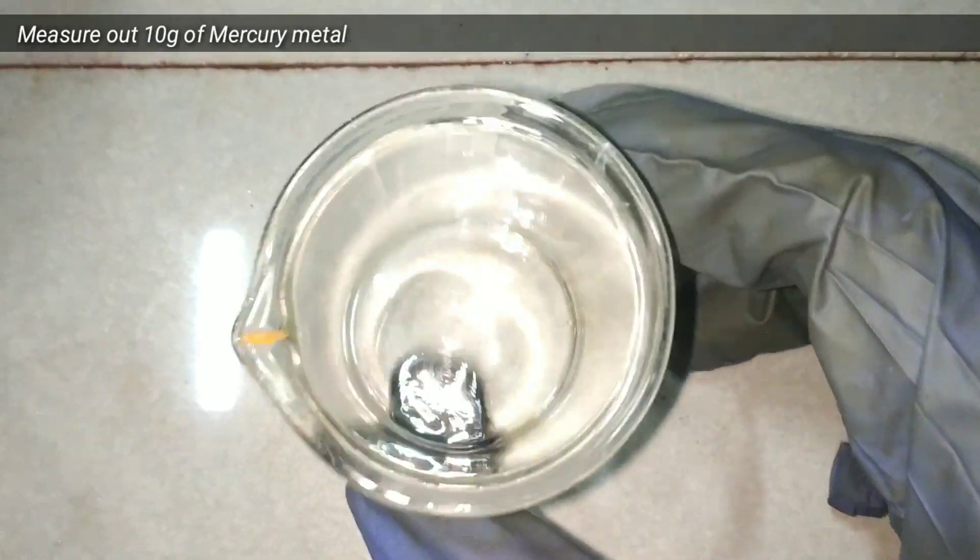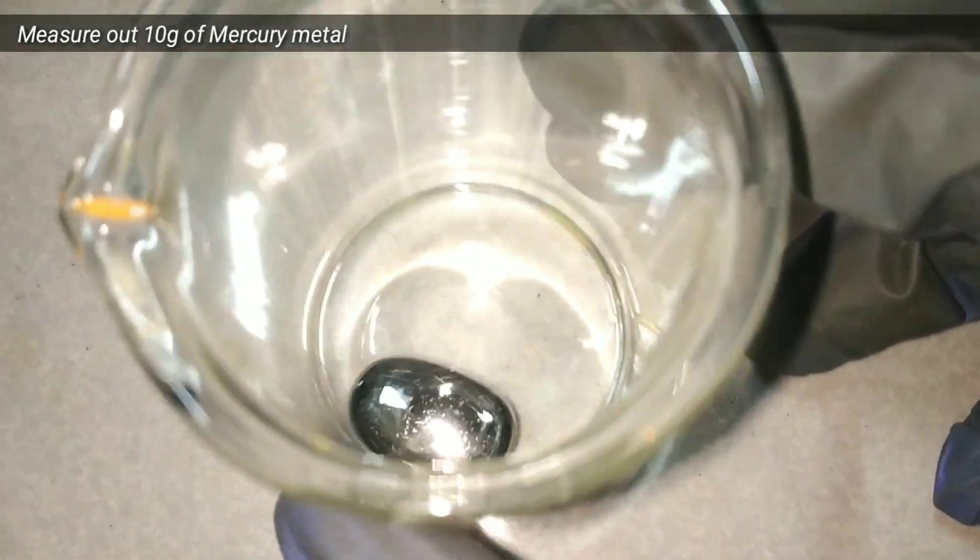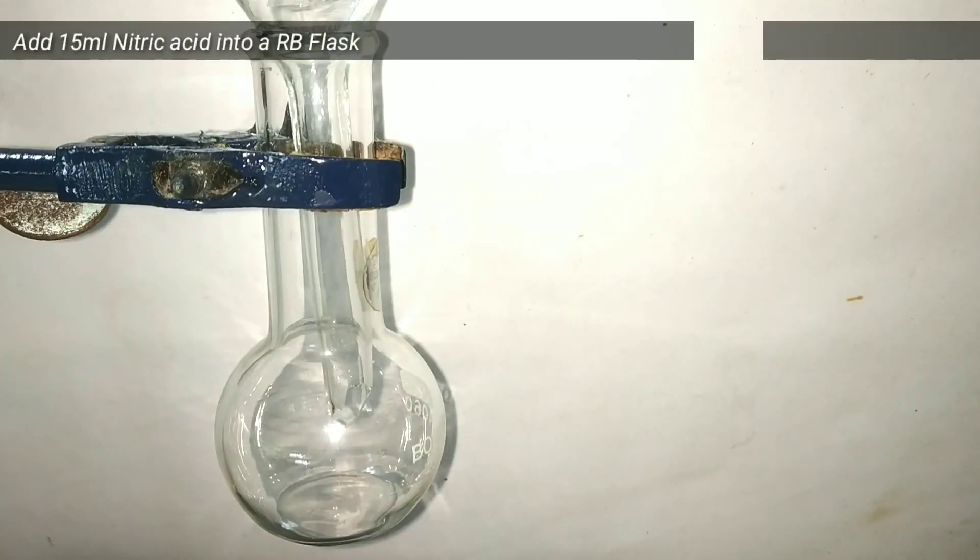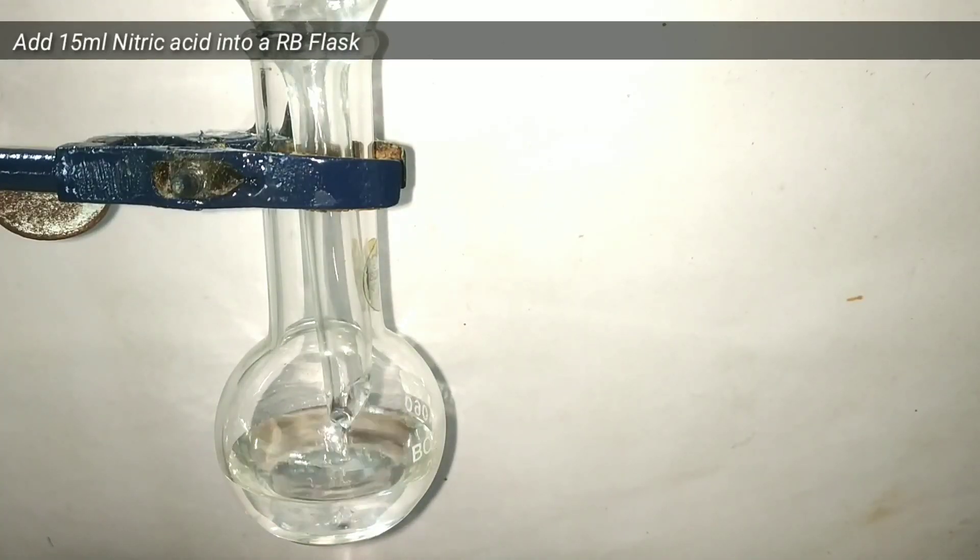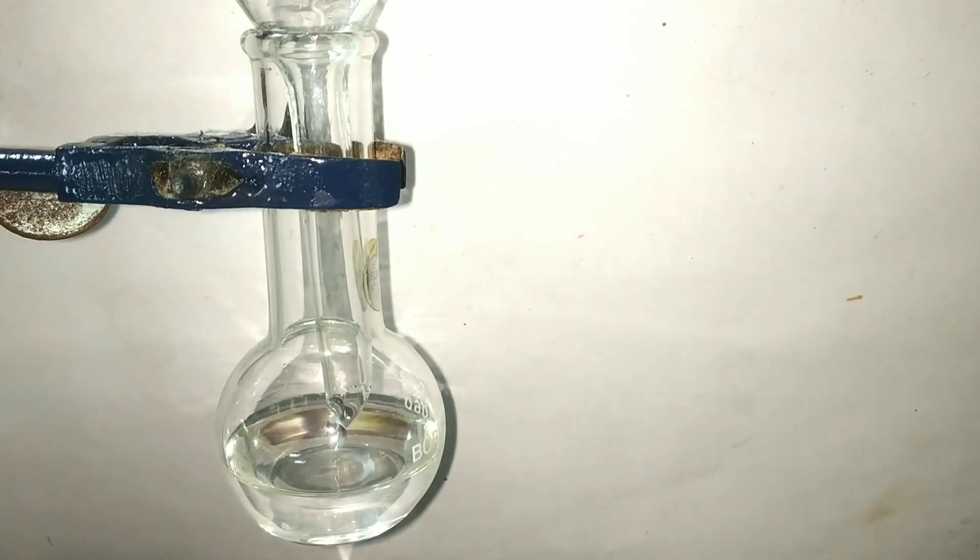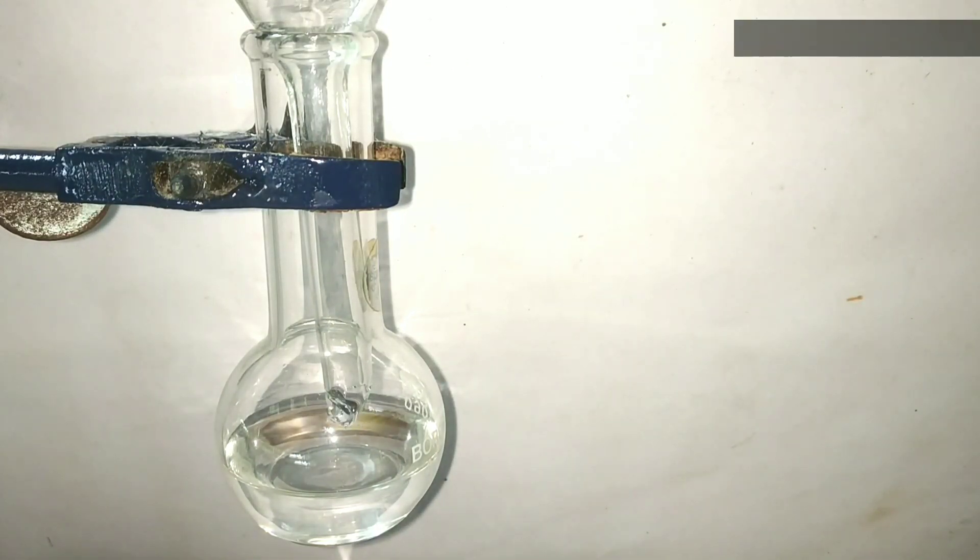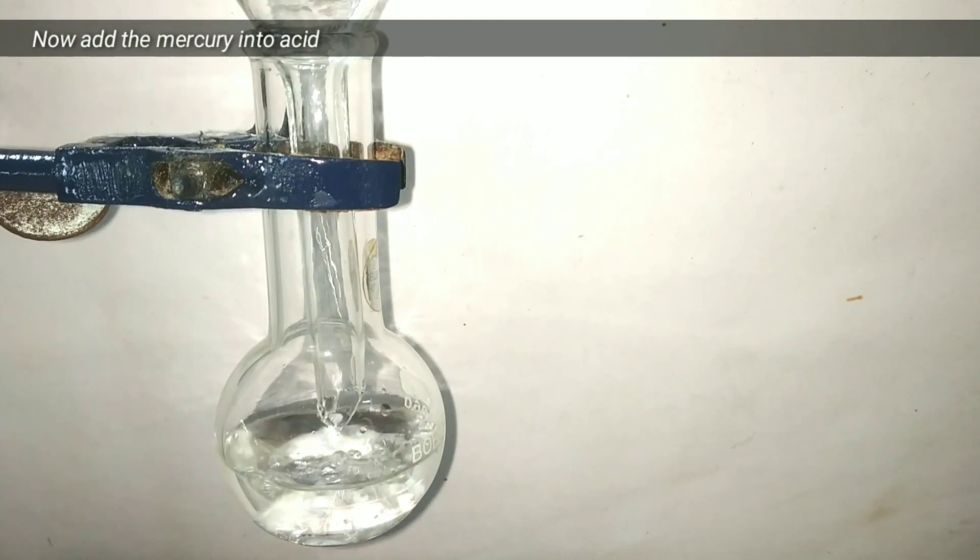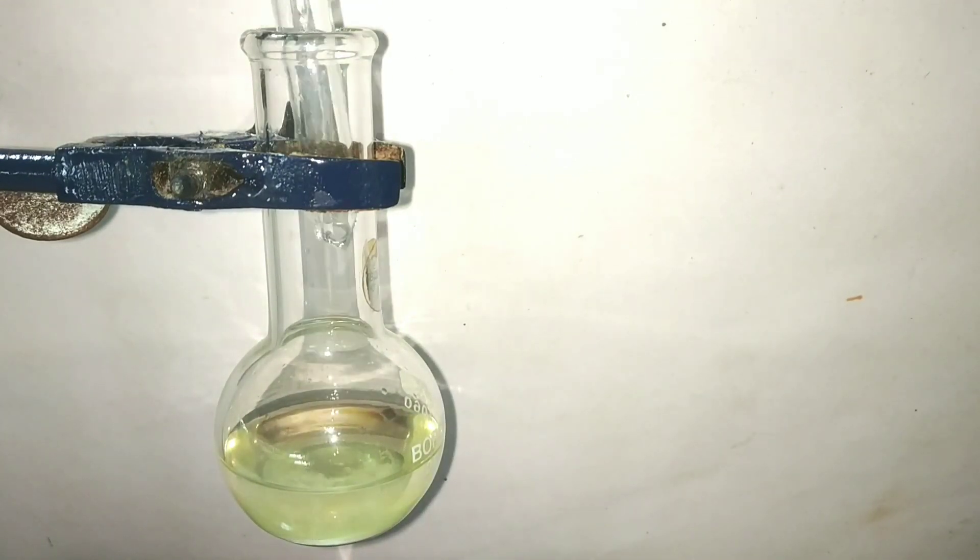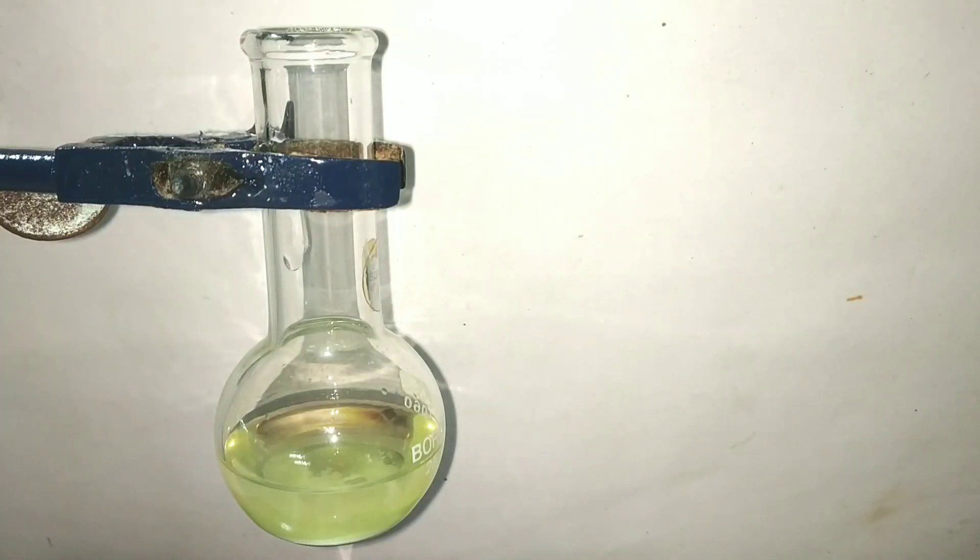Start by measuring out 10 grams of mercury metal. Mercury, as you know, is a metal that exists in the liquid state at room temperature. Now we add 15 milliliters of concentrated 70% nitric acid into the round bottom flask. Into that, we add the 10 grams of mercury metal. Immediately upon addition of the metal, you can see a bubbling and yellowish brown discoloration of the contents of the flask.